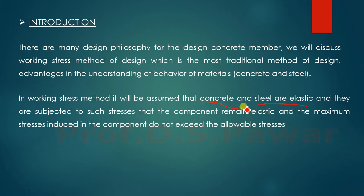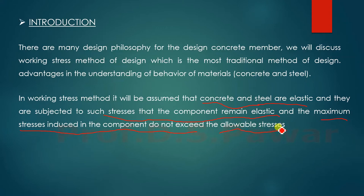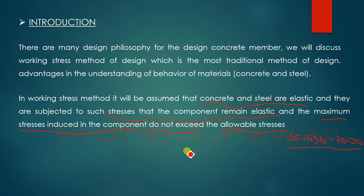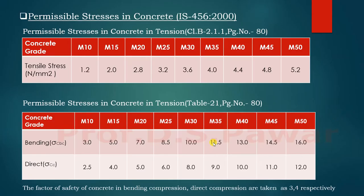In working stress method it is assumed that the two materials, concrete and steel, are elastic and they are subjected to stresses such that the component remains elastic. The maximum stresses induced in the component do not exceed the allowable stresses. The allowable stresses in working stress method are given in IS 456-2000, and we are going to use those to design structures.